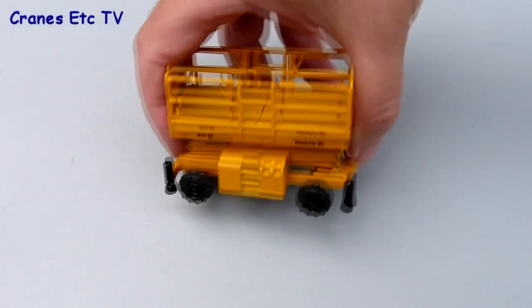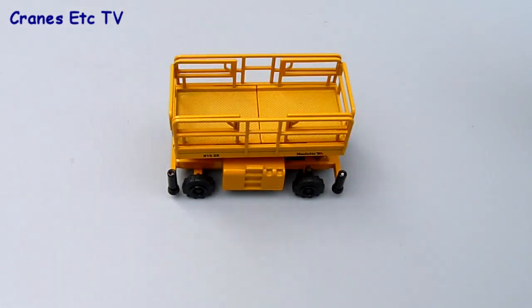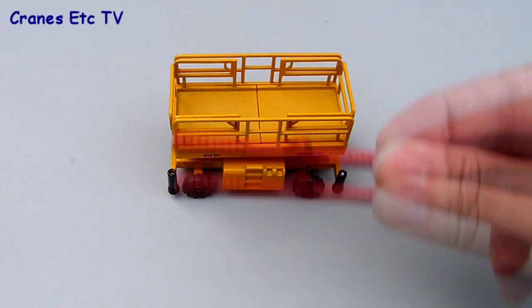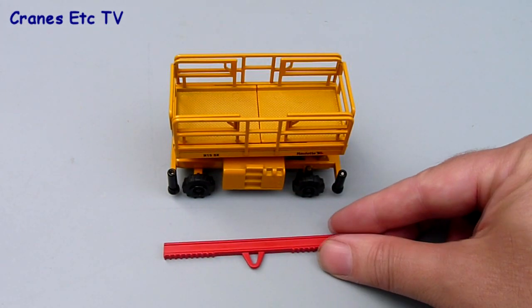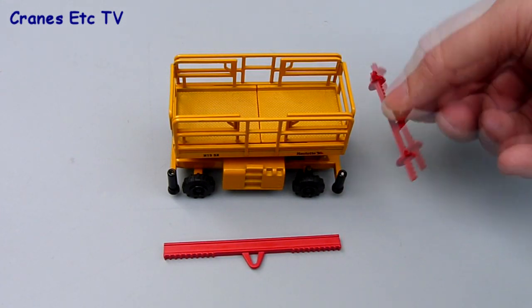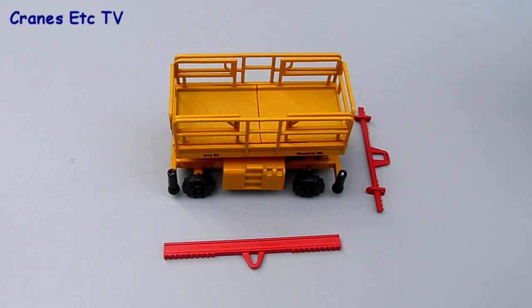However, the most interesting way to use this set of lifting beams is to lift something like this Haulot scissor lift. The main beam is long enough to cover the length of the scissor lift and you can see that the two cross beams can also be set to cover the width of the scissor lift with the chains going down to the stabilizer pads.